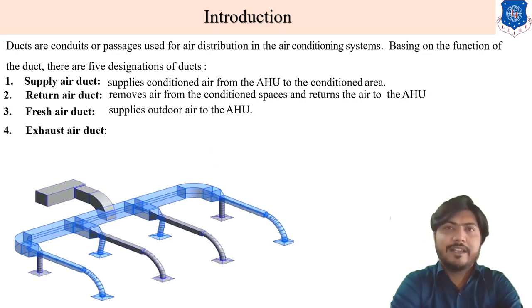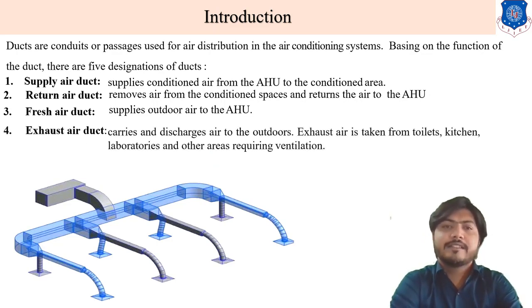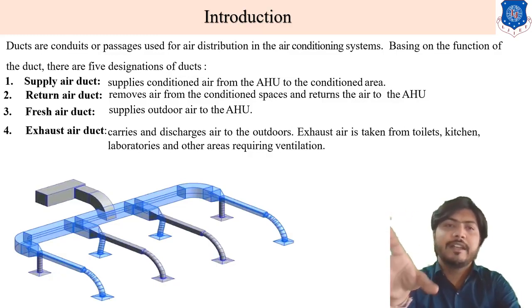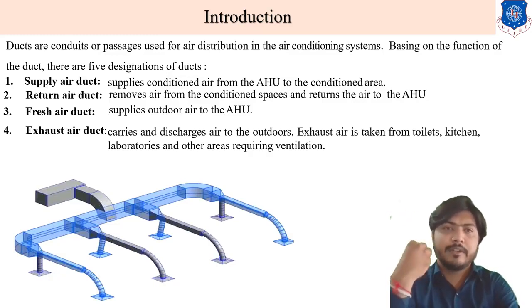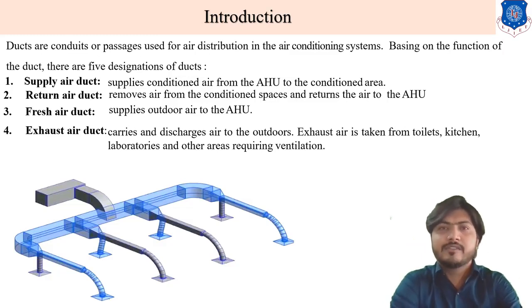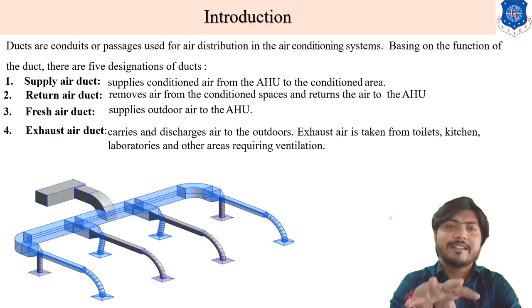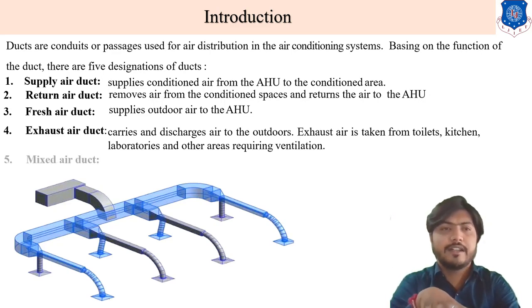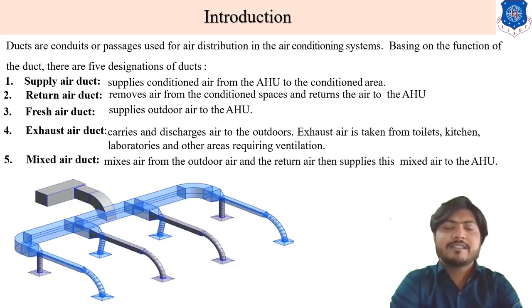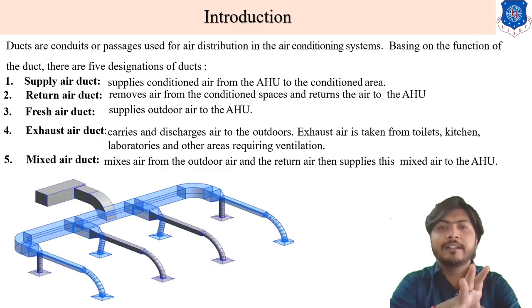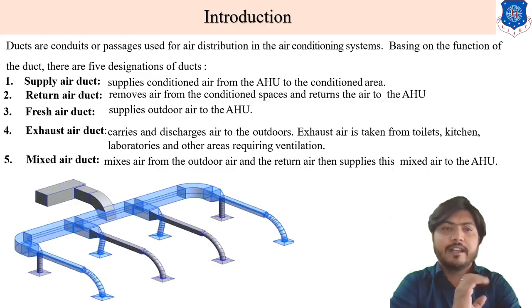The fourth type is the exhaust air duct, which carries or discharges air to outdoors — the remaining air after the return air duct is expelled outside. Exhaust air is taken from toilets, kitchens, laboratories, and other areas requiring ventilation. The fifth is the mixed air duct, which mixes outdoor air and return air and supplies this mixed air to the AHU.